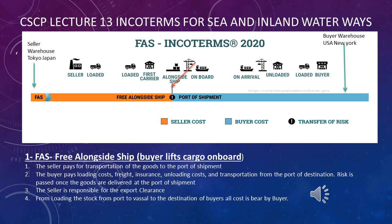Let's go for the first term: FAS, Free Alongside Ship. Look at the snap — your left side is a seller warehouse in Japan, and your right side is a buyer warehouse in New York. The responsibility of the seller starts from picking the stock from its warehouse and delivering it to the port. Delivering to the port is the responsibility of the seller.